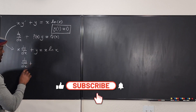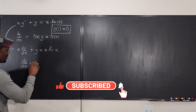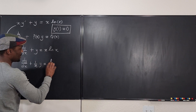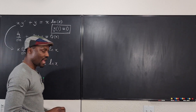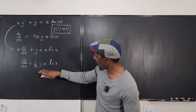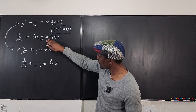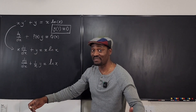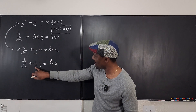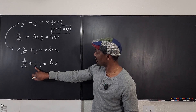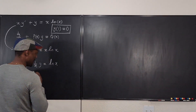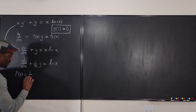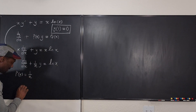After dividing every term by x, we get dy/dx plus one-over-x times y equals the natural log of x. This now looks like the standard form. I just need to identify P(x), which is what I need for my integrating factor. So P(x) equals one over x.